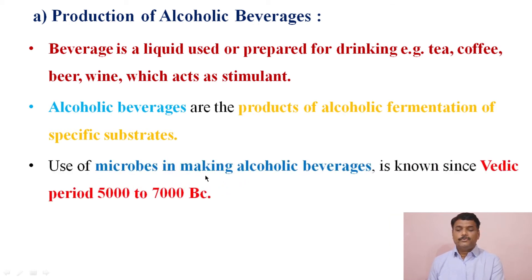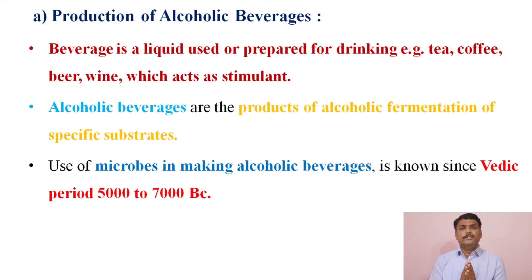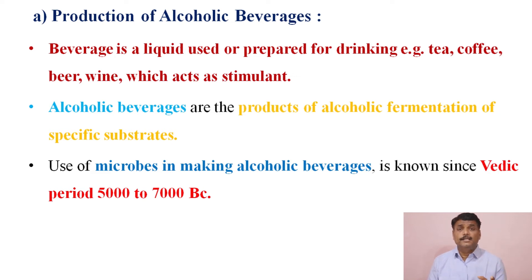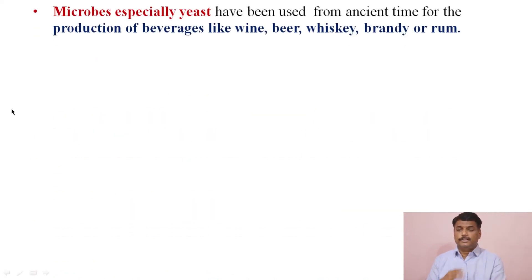The use of microbes in making alcoholic beverages has been known since the Vedic period, approximately 5000 to 7000 BC. Microbes, especially yeast, have been used from ancient times for the production of beverages like wine, beer, whisky, brandy, and rum.